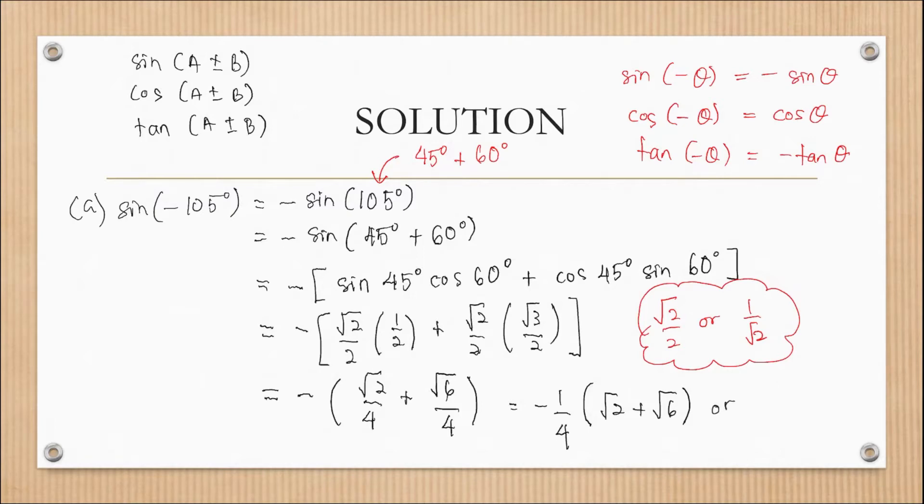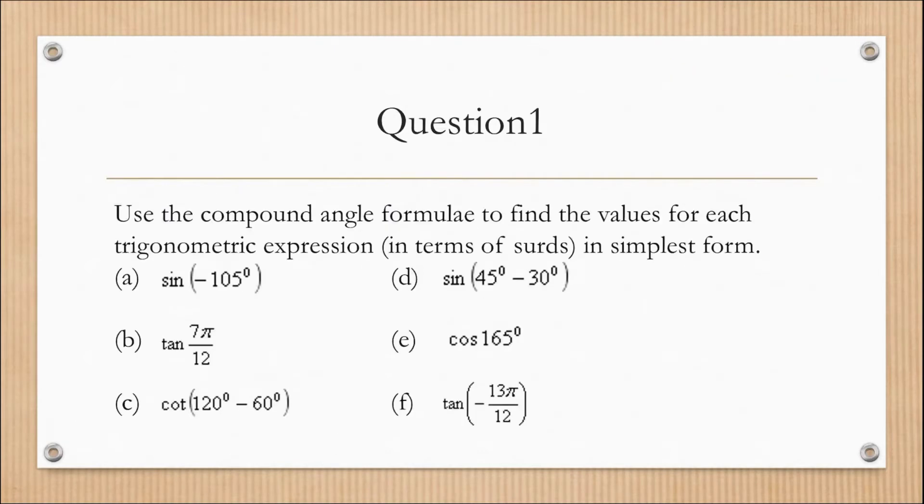So for those who use 1/√2, you might have different answer: negative 1/(2√2) in bracket (1 + √3). Okay.